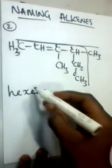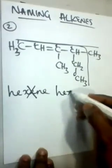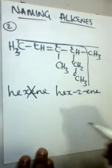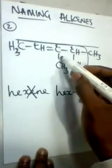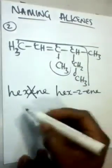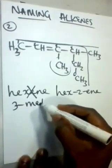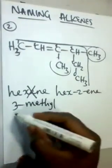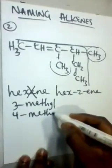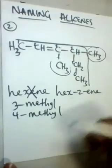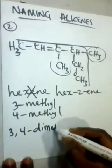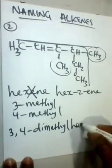So it is hex-2-ene because the double bond is on carbon number two. Let's identify the functional groups. There's a methyl group on carbon number three — that's 3-methyl. Also, there's another methyl group on carbon number four — that's 4-methyl. Combining all of this, the name of the compound is 3,4-dimethyl-hex-2-ene.